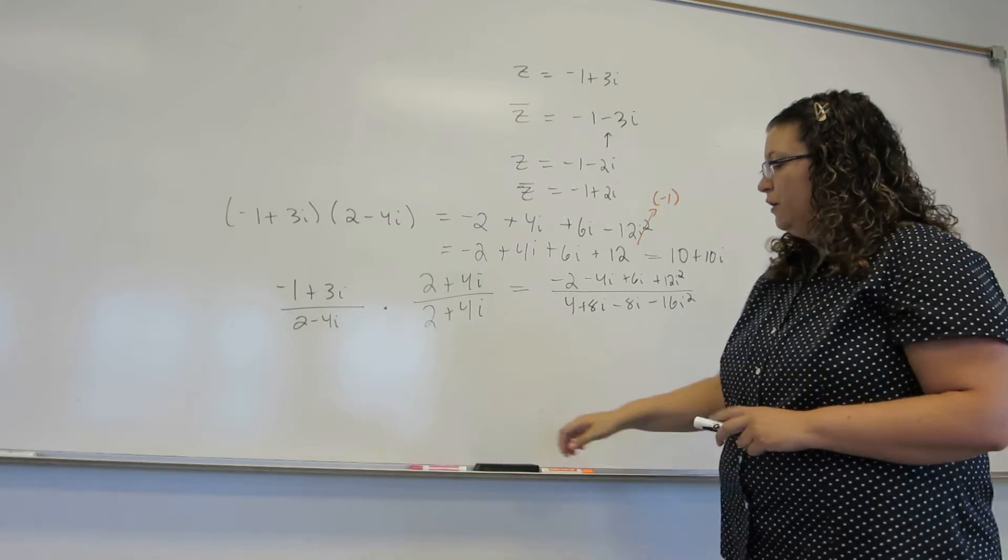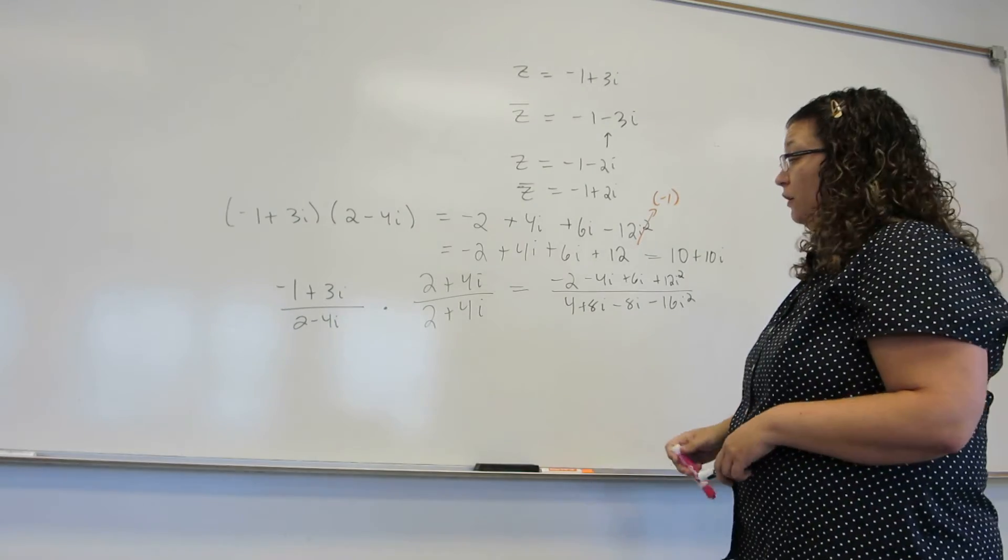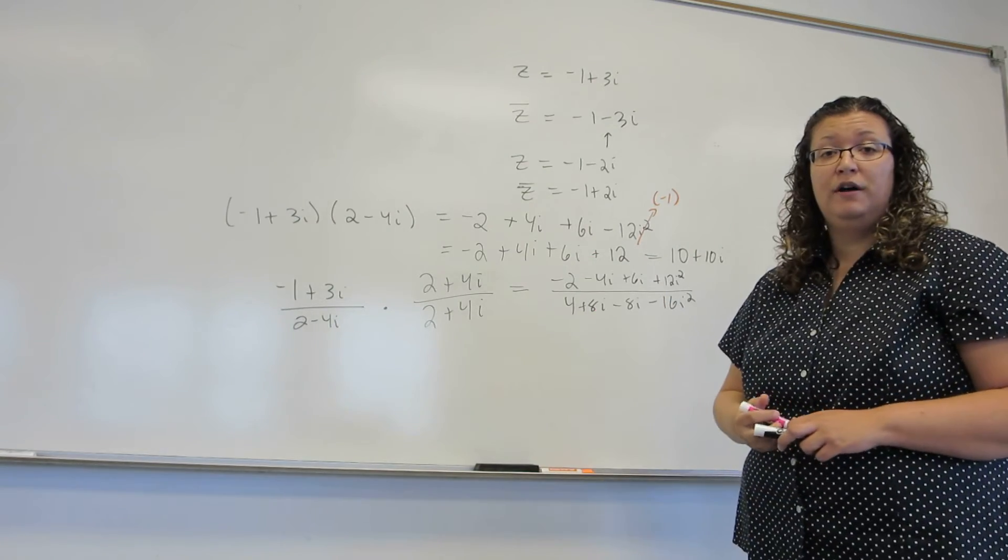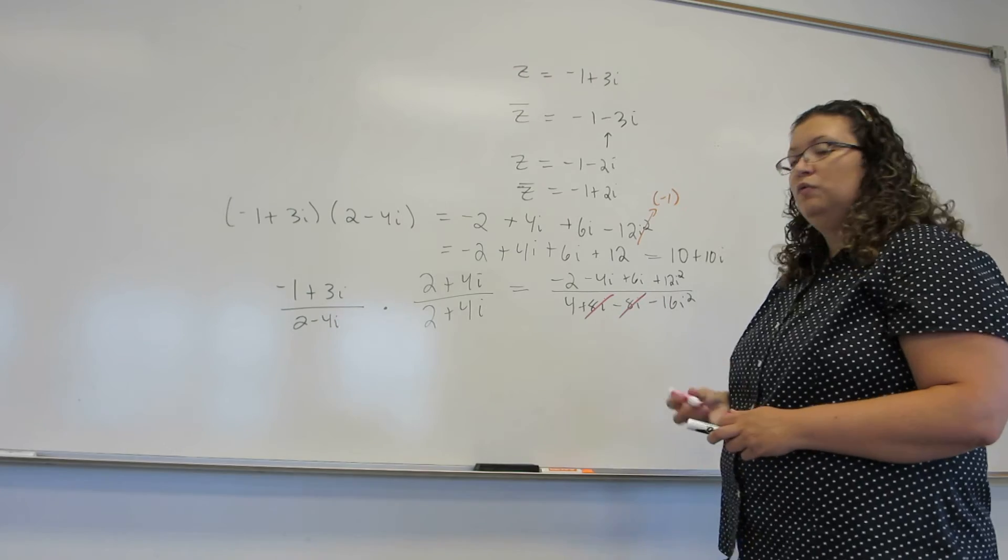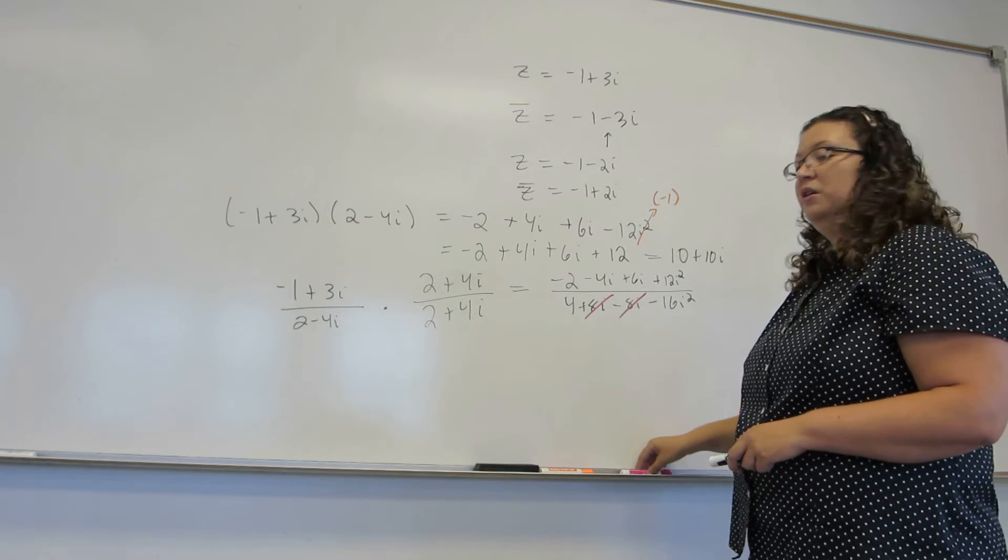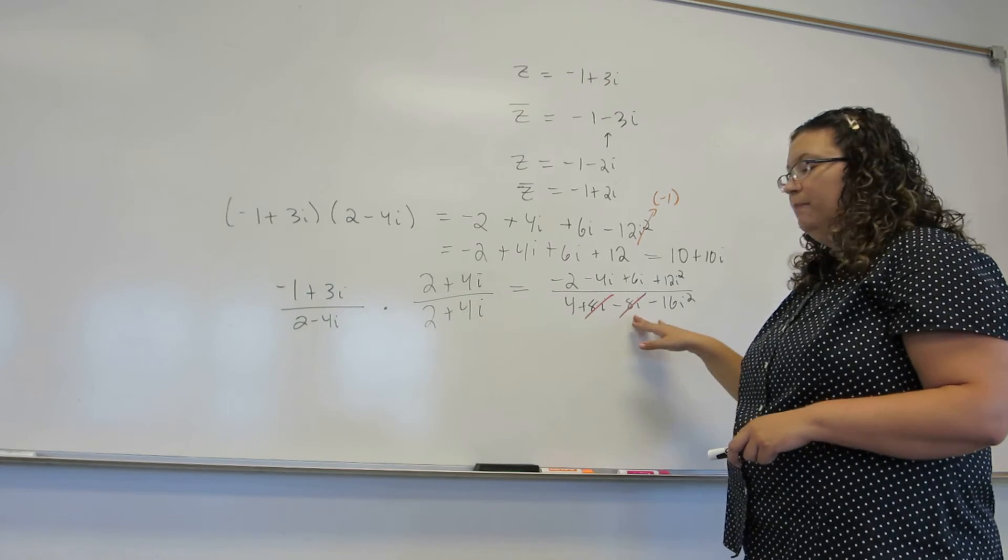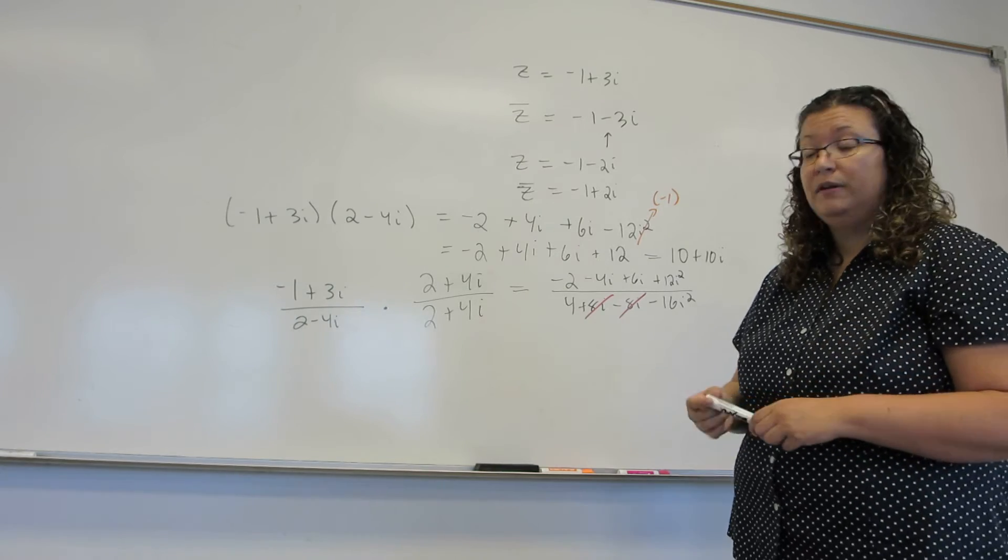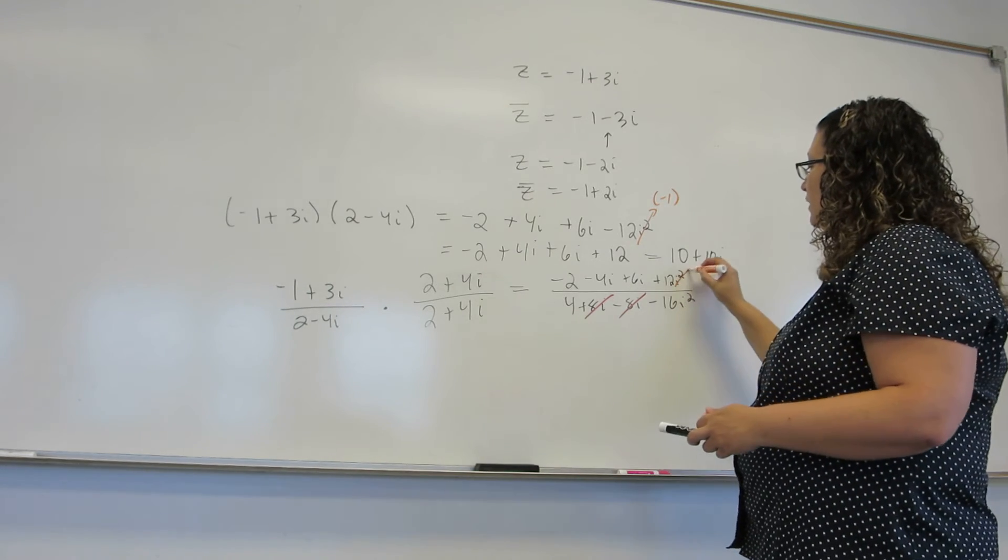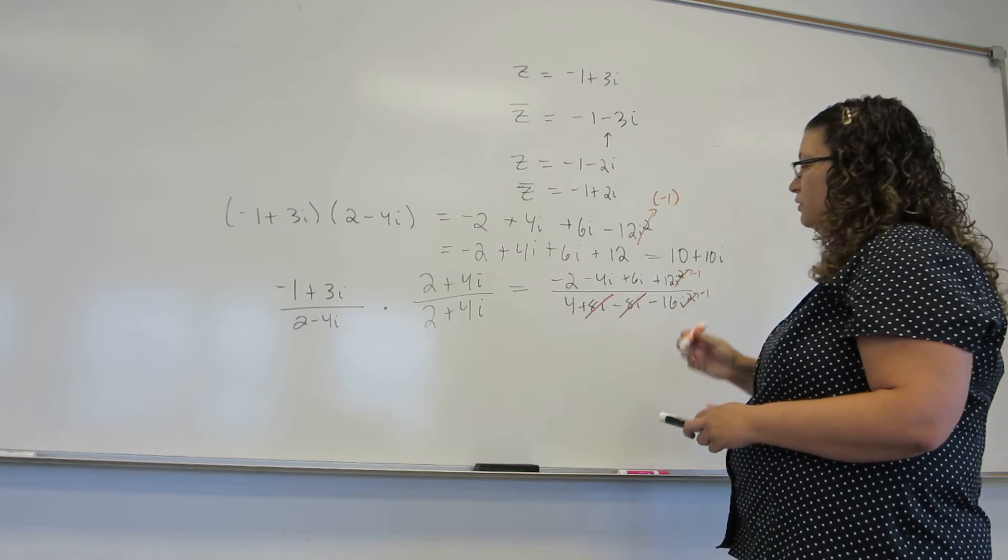Now there's a couple things we want to notice. First of all, by choosing to multiply top and bottom by that conjugate, the i terms will always cancel each other out in the denominator. Because plus i minus i is like nothing ever happened. Also, we have these i squared terms that are really minus 1.